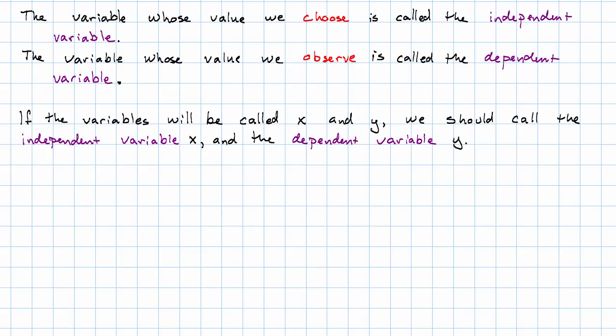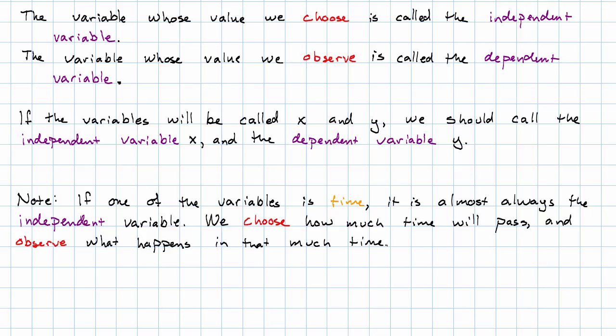One other thing to note regarding independent and dependent variables and applications. If one of the variables is time, time is almost always the independent variable. That is, almost always we choose how much time to let pass and observe what happens in that amount of time.